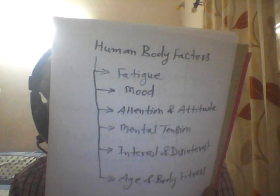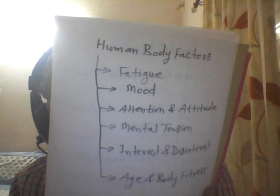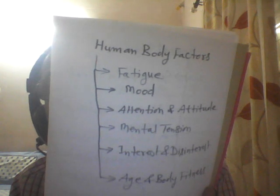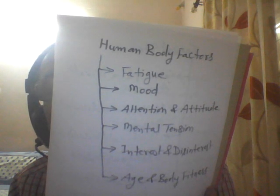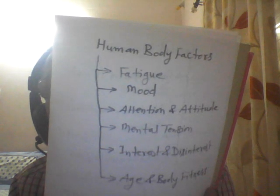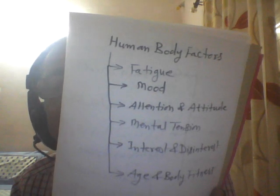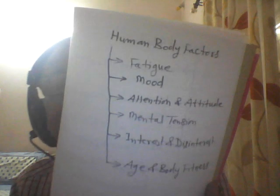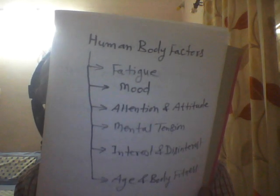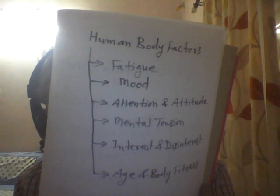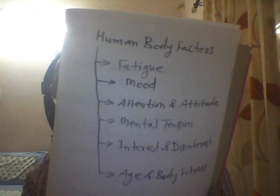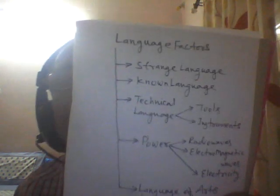Interest and disinterest — if communication is concerned with profit and money-making, people may take interest; otherwise there may be disinterest. Interest and disinterest affect communication differently from person to person. Body fitness also affects communication — old men and persons with physical limitations may not communicate in a proper way. These are the factors relating to body fitness. Now, language factors — we consider strange language, meaning a foreign language we don't know, which affects the ability to grasp and understand communication.